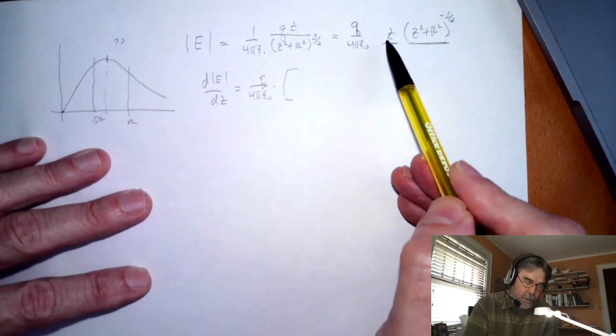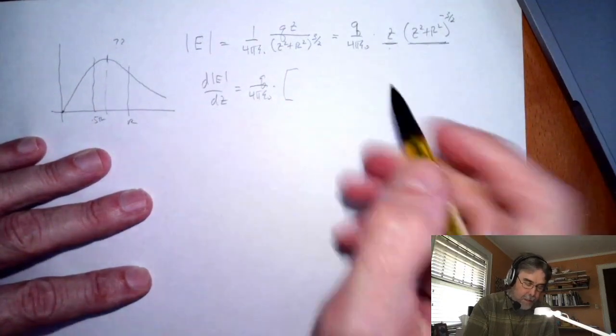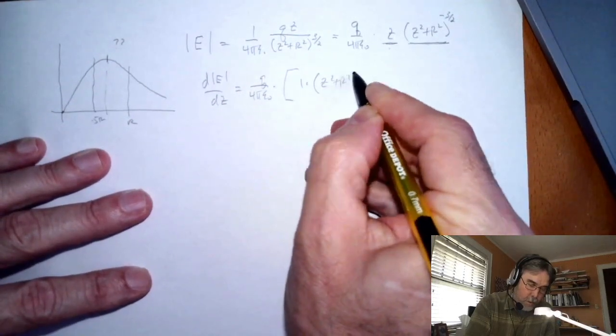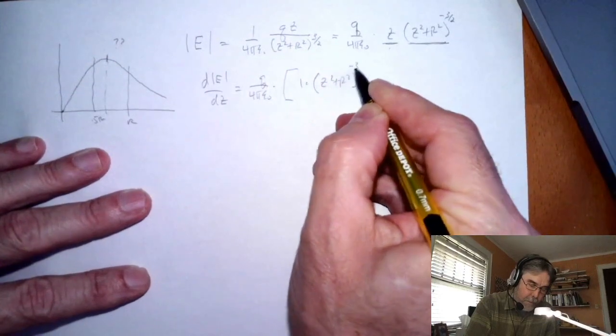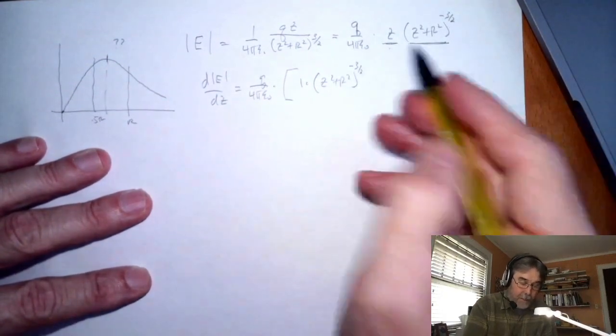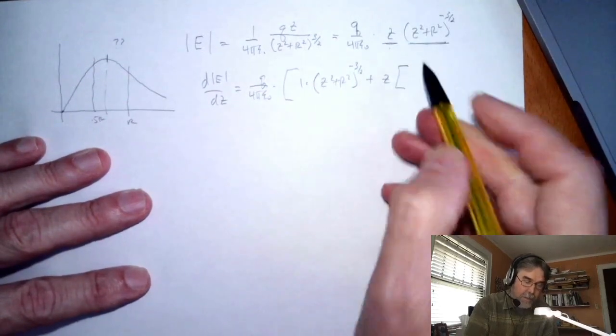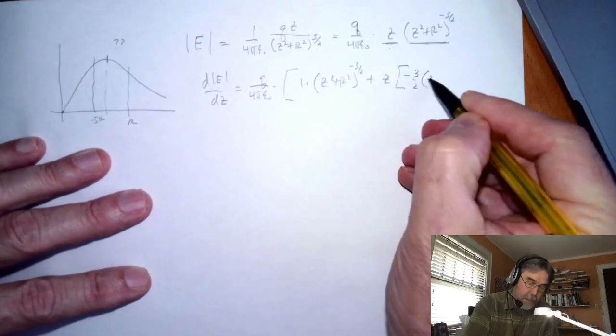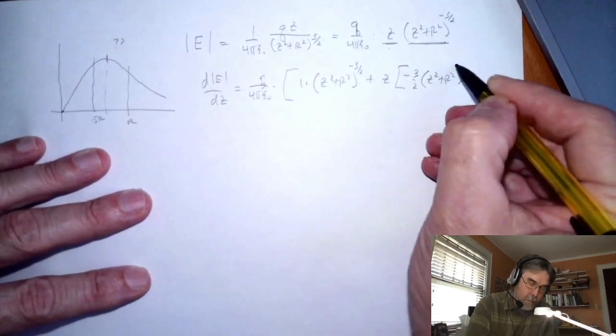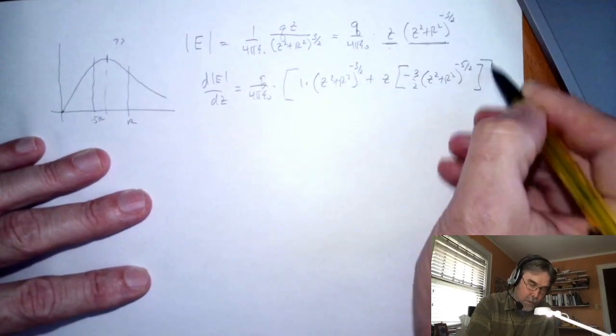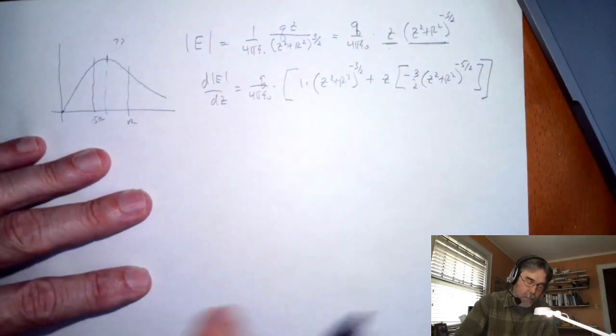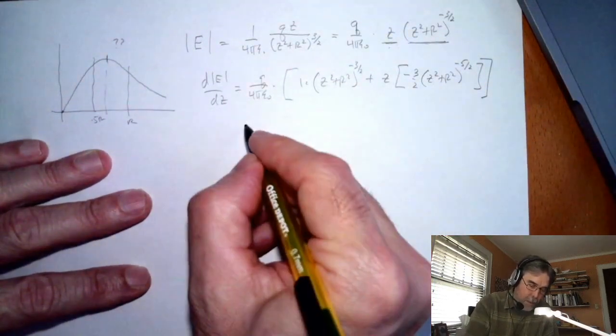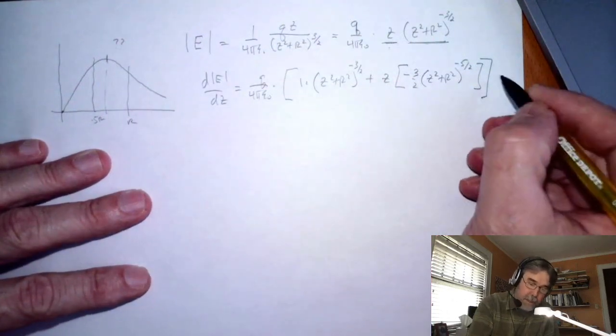So the q over 4πε₀ that just is a constant. Then I've got the derivative of z times the second guy, well the derivative of z is just 1 so it's 1 times z squared plus r squared to the negative 3 halves and then I've got z times the derivative of that guy. Well that's going to be minus 3 halves and then it's going to be z squared plus r squared to the minus 5 halves because remember when you take a derivative you've got to take the power down by 1, so negative 3 halves minus 1 is negative 5 halves and then that all has to be equal to 0.